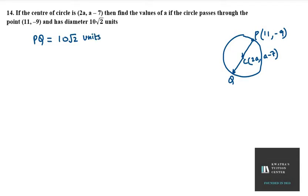If we take half of the diameter, we get PC, which is our radius. So 10√2 divided by 2 gives us 5√2 units. Now, since we have PC, we can find the distance between points P and C using the distance formula.